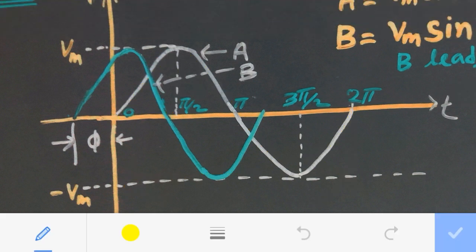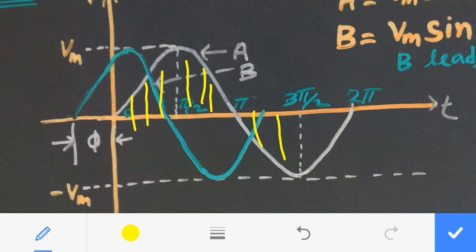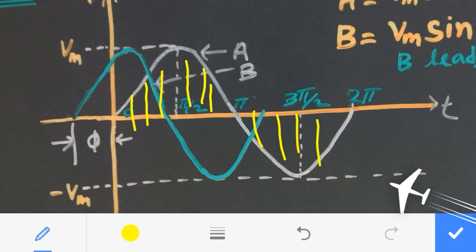One cycle is nothing but the set of positive values as well as the negative values. This is known as the cycle.